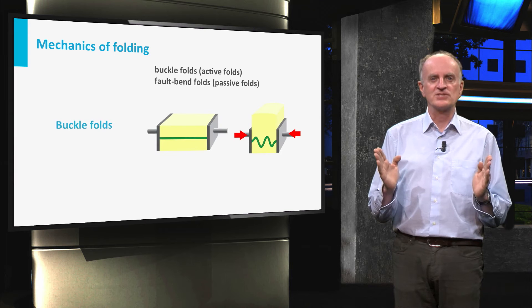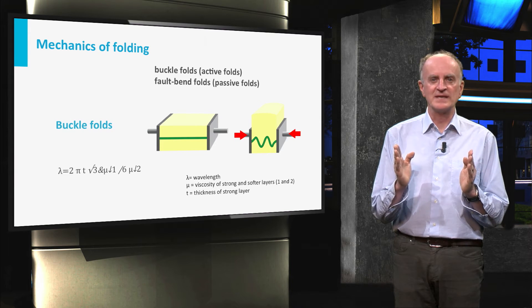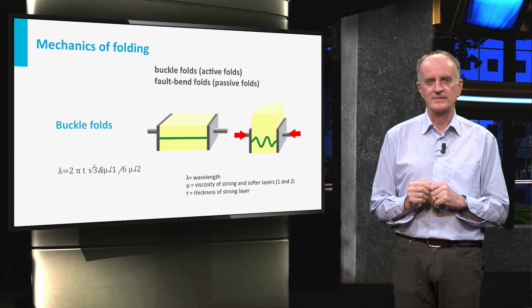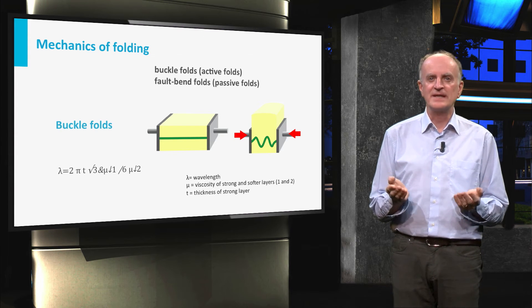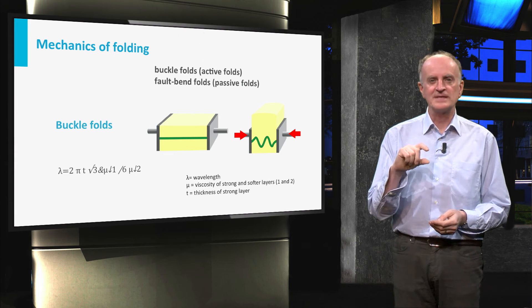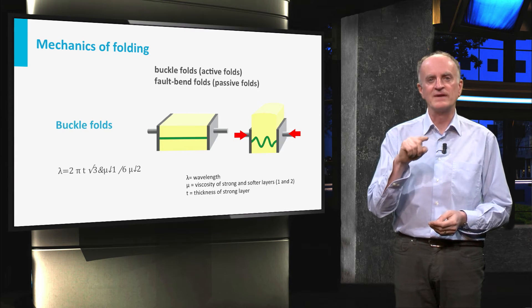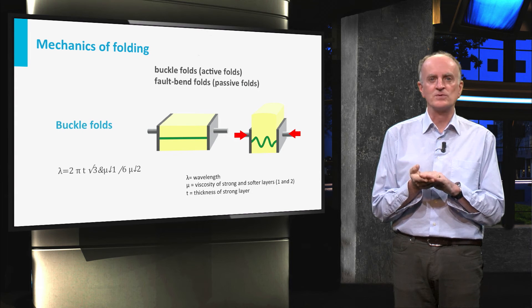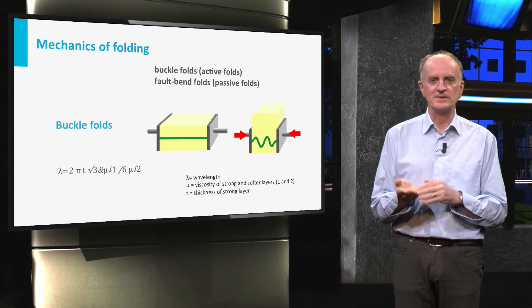Buckle folds are generated by horizontal shortening affecting a layer or bundle of layers surrounded by softer lithologies. From the equation, you see that the thicker the folded layer is, the larger the wavelength will be. Similarly, the wavelength of the folds also increases when the viscosity contrast increases.